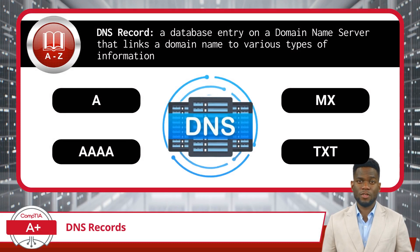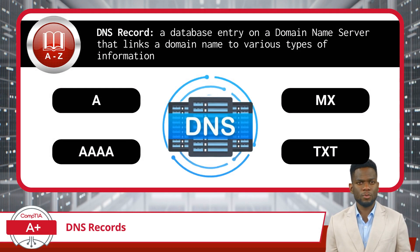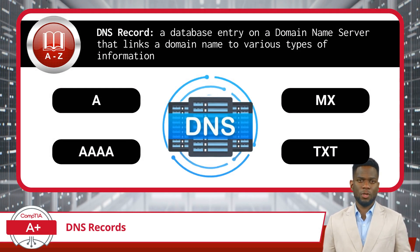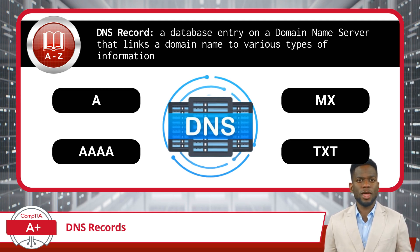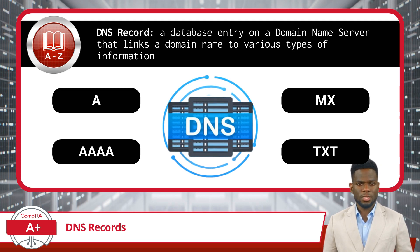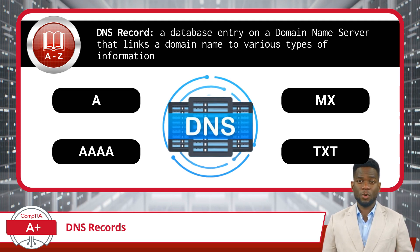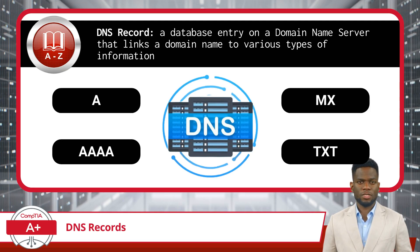So how do these DNS servers work? Simply put, they house a database of DNS records. A DNS record is a database entry on a domain name server that links a domain name to various types of information. These records are stored in the server's database and play a critical role in controlling the behavior of internet traffic. They contain instructions on how to route requests for a domain, including IP addresses, mail server configurations, and other essential data.